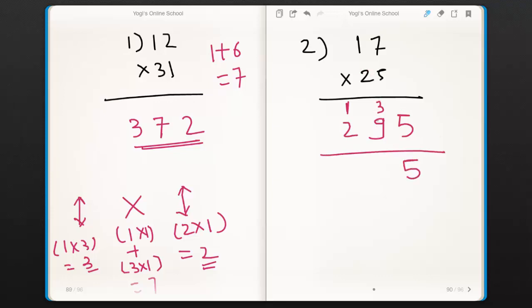9 plus 3 is 12. Carry 1. Now 1 plus 2 is 3 plus 1 is 4. Therefore 17×25 is 425.